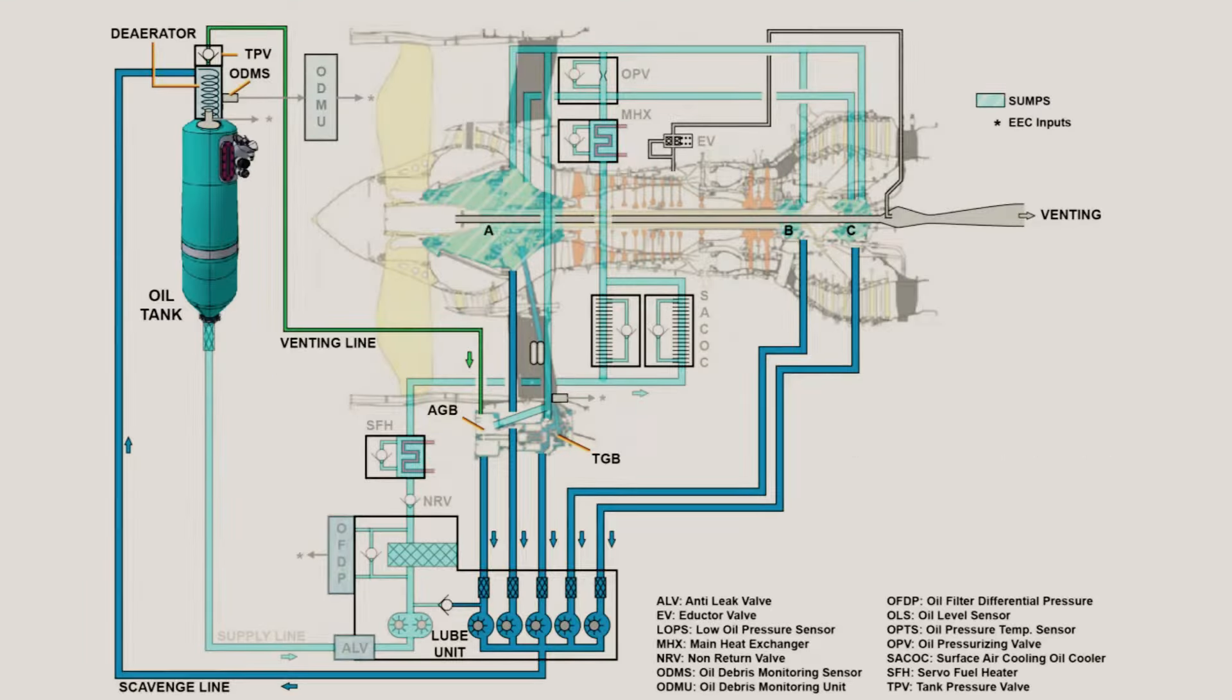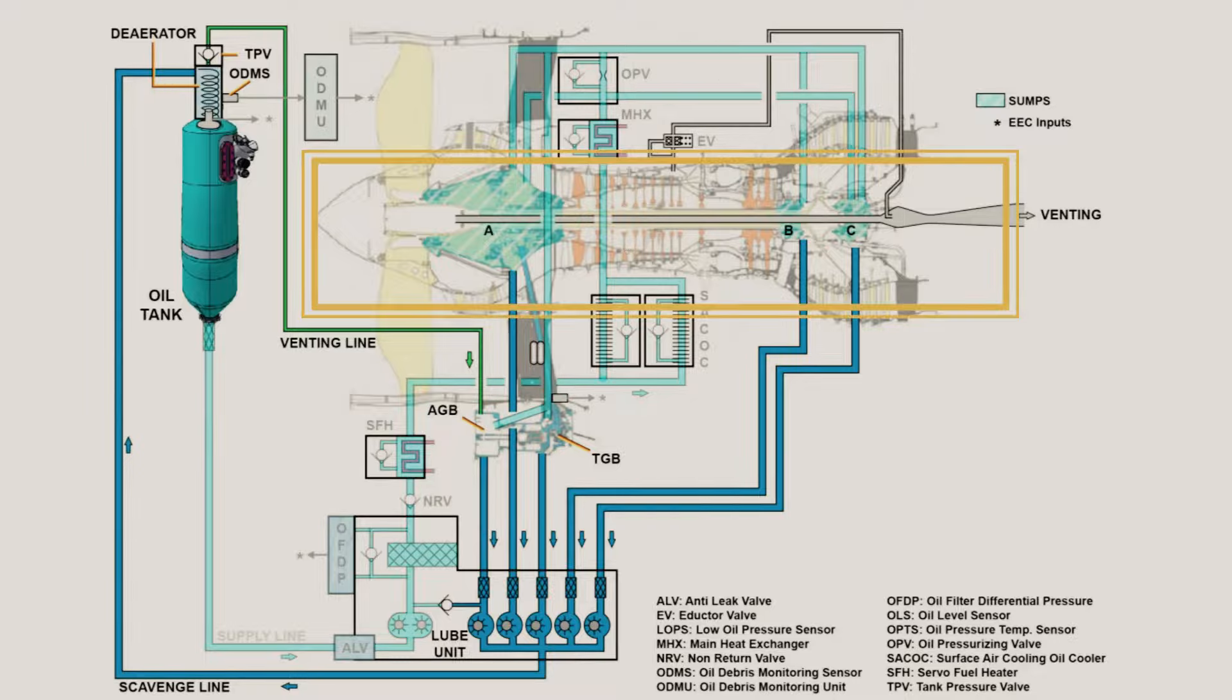First, we will identify the components we find in the LEAP 1A engine oil system. The system mainly consists of an oil tank, an anti-leakage valve, a lube unit, a servo fuel heater, a surface air cooled oil cooler, a main heat exchanger and oil pressurizing valve, oil sumps, and various valves.